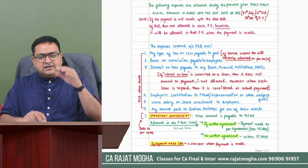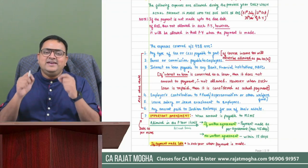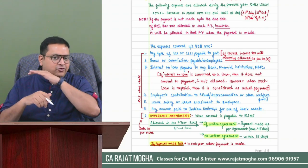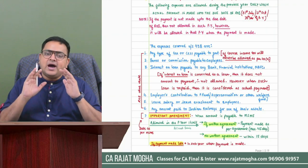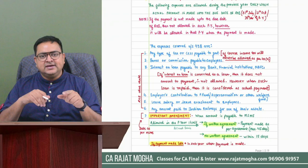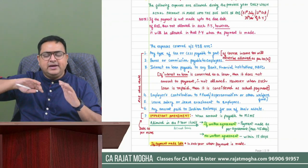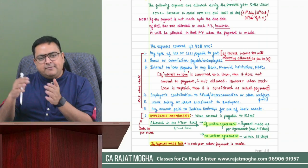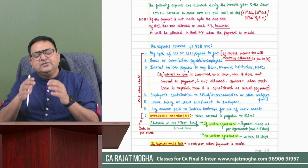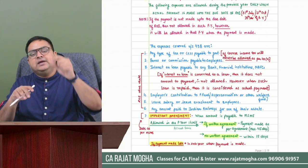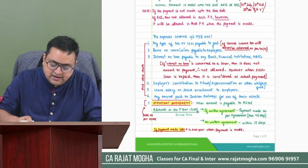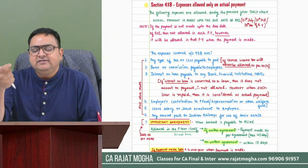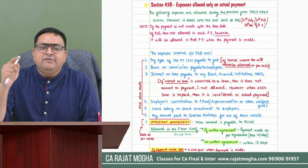Section 43B says: regarding these listed expenses, they will only be allowed if actual payment is made up to the due date of return of income, irrespective of the method of accounting followed. Generally, assesses follow mercantile basis and expenses are allowed on accrual, but for these listed expenses that rule does not apply. If payment is not made up to the due date of return, the expense is disallowed — but it can be allowed in a subsequent year when payment is actually made.